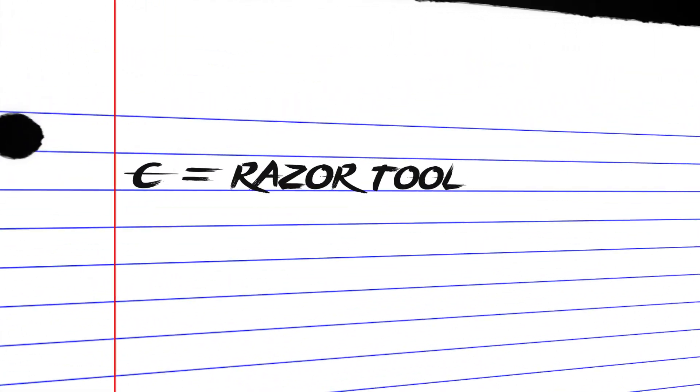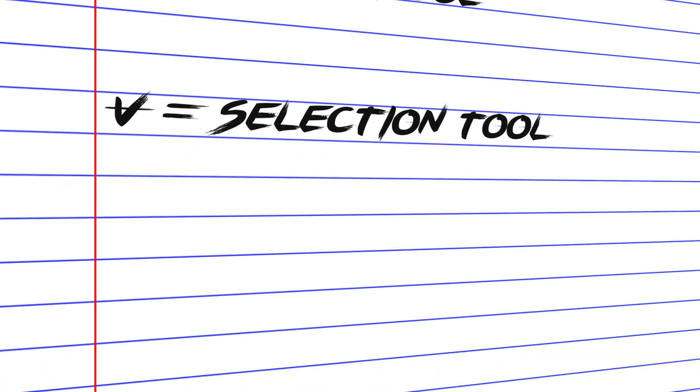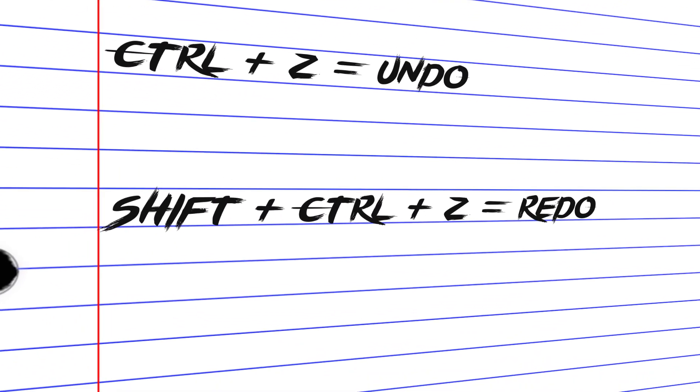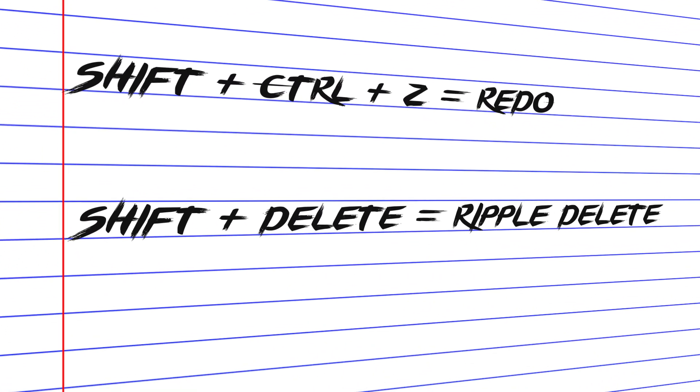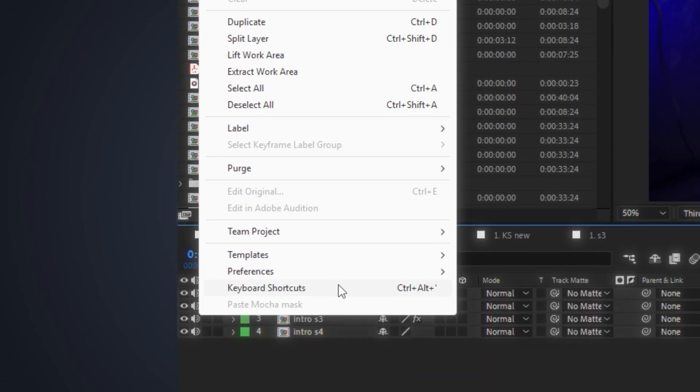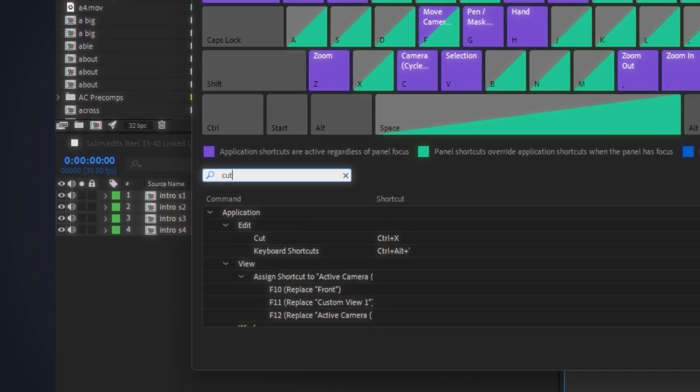C for the razor tool, V for the selection tool, Ctrl-Z and Shift-Ctrl-Z for undo and redo, and Shift-Delete for ripple delete. You can actually customize these shortcuts in Premiere Pro to fit the way you work — just go to the keyboard shortcuts section under Edit and set them however you want. Once you get the hang of these, you'll wonder how you ever edited without them.